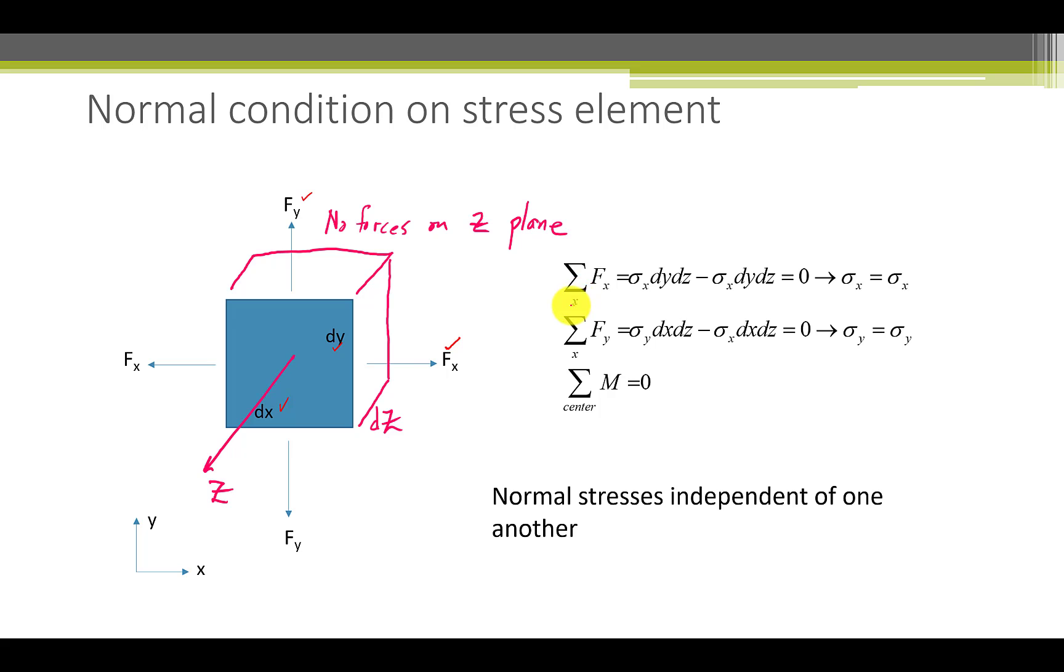We'll sum the forces all acting in the x-direction, and we have the stress sigma x times the area minus sigma x, which is acting in the other direction, times the x-direction times the area on the back face is equal to zero. This shows that the stresses sigma x here is exactly equal to the stress in this direction.